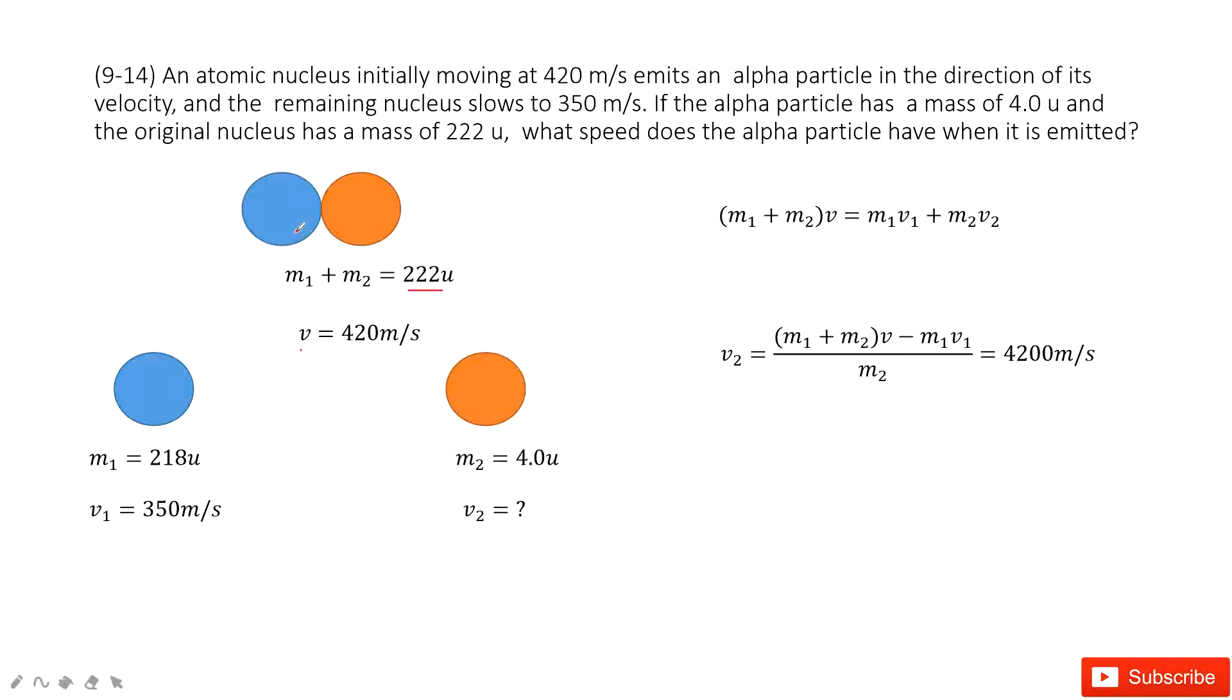And then this nucleus decays into two parts, M1 and M2. The mass for M2 is given, so very easily we can find M1. Agree? And then the velocity for V1 is given.